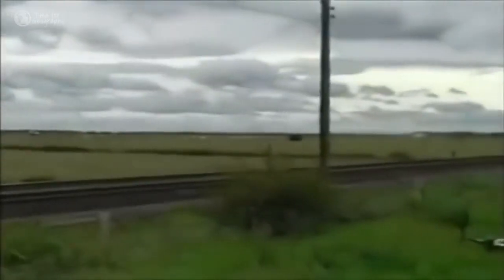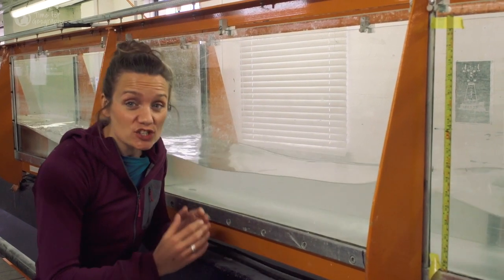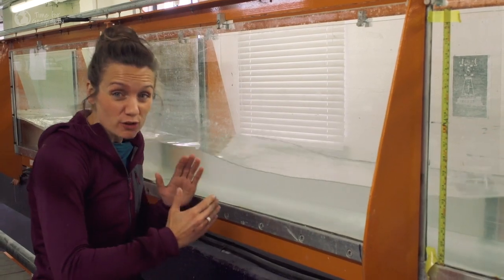Once the landslide has happened, the waves travel very quickly across the ocean at speeds of between 600 and 900 kilometers per hour. That's the speed of a jet aircraft. At this point each individual wave can be over 200 kilometers long.